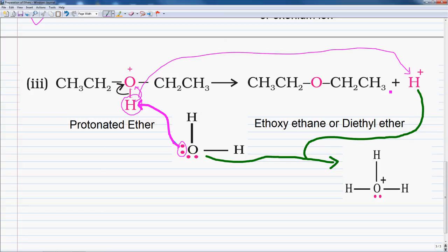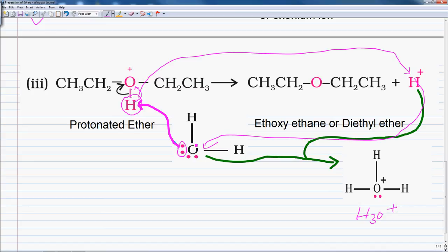Hydrogen is accepted by the water molecule, and this water molecule with H+ now forms H3O+. Our protonated ether is now converted into ethoxyethane, which is our final product.